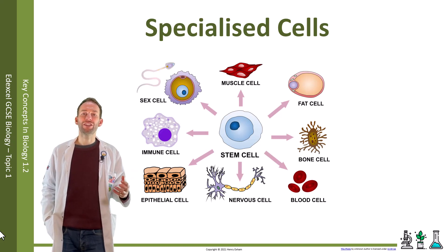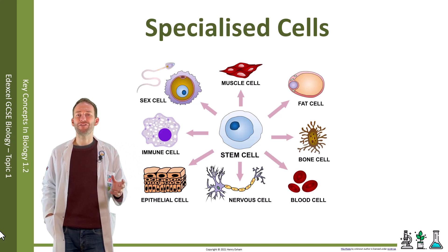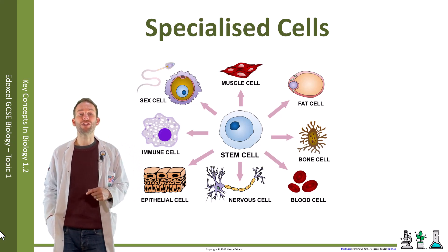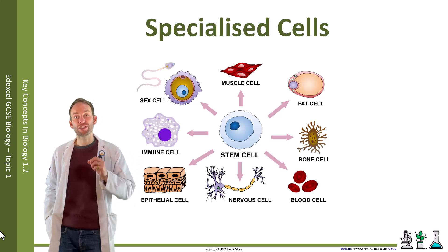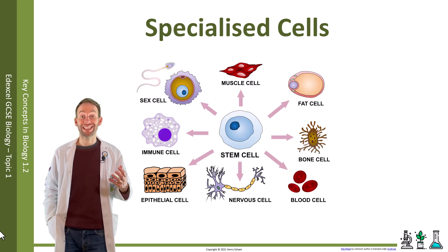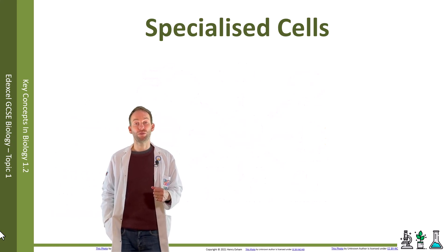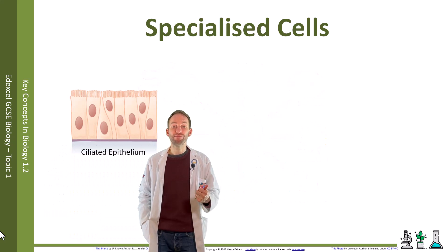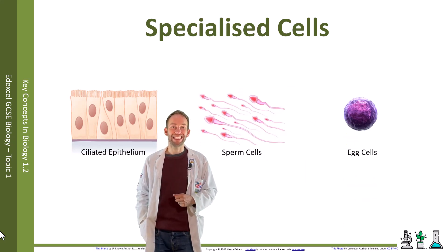The cells that we've looked at in the course so far are just generalized cells. In reality, there are over 200 different types of specialized cells in humans that are adapted to carry out particular functions. You'll come across many of these during the GCSE course, but for now we will look at three examples: the ciliated epithelium, sperm cells, and egg cells.